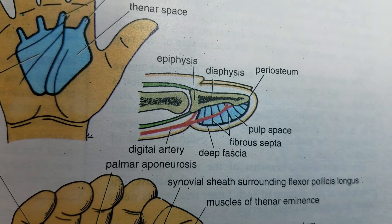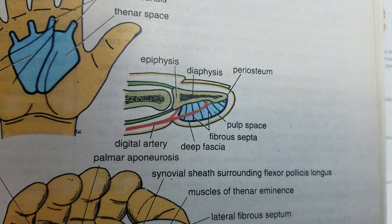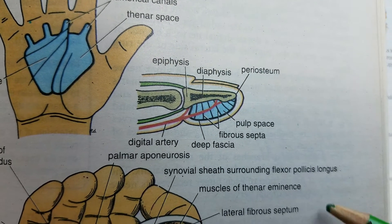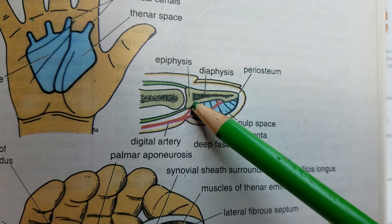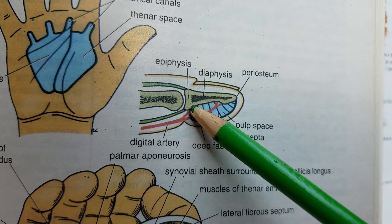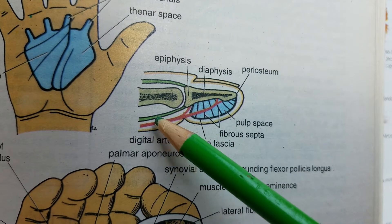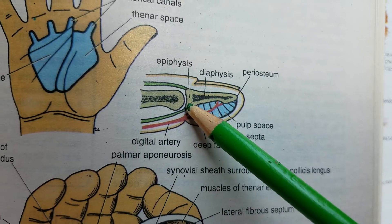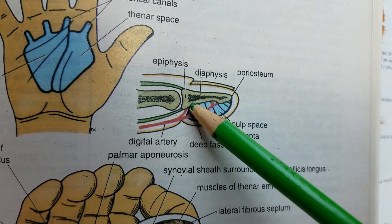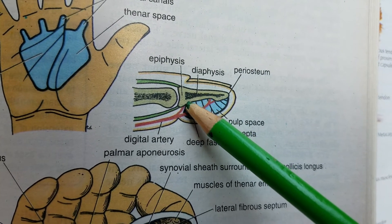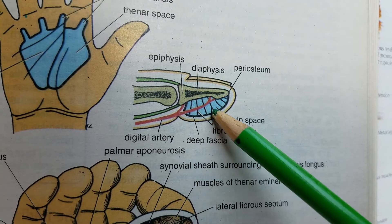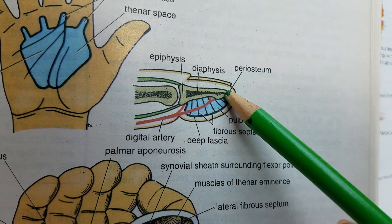The pulp spaces are spaces created by deep fascia in the tips of your fingers on the palmar side, which is attached on the proximal side of the distal phalanx, just distal to the insertion of the long flexor tendon — the flexor digitorum profundus tendon — which attaches to the base of the distal phalanx. So just distal to that is the insertion of the deep fascia, from that part of the distal phalanx all the way to the tip of the distal phalanx.